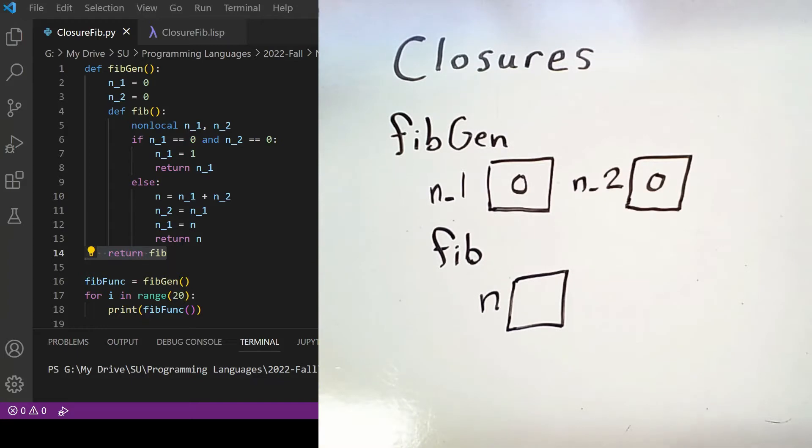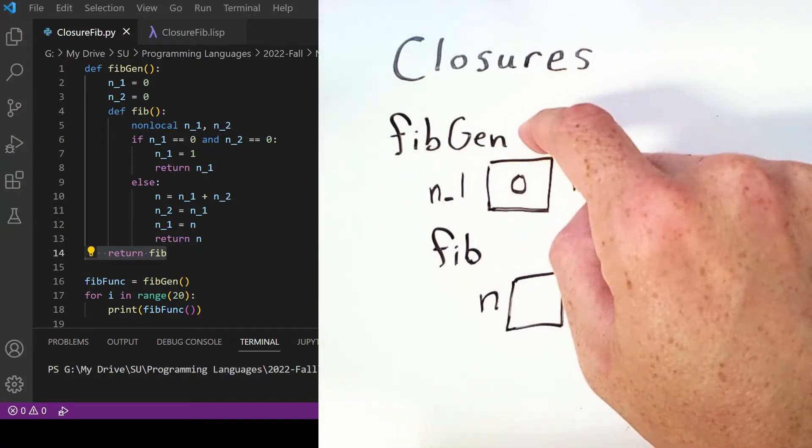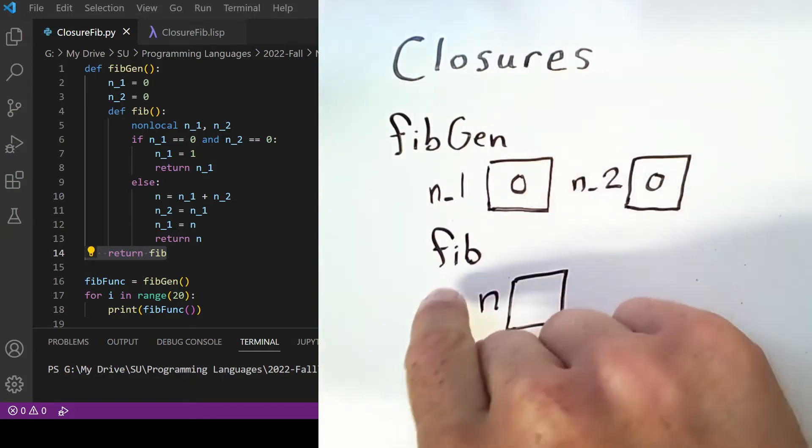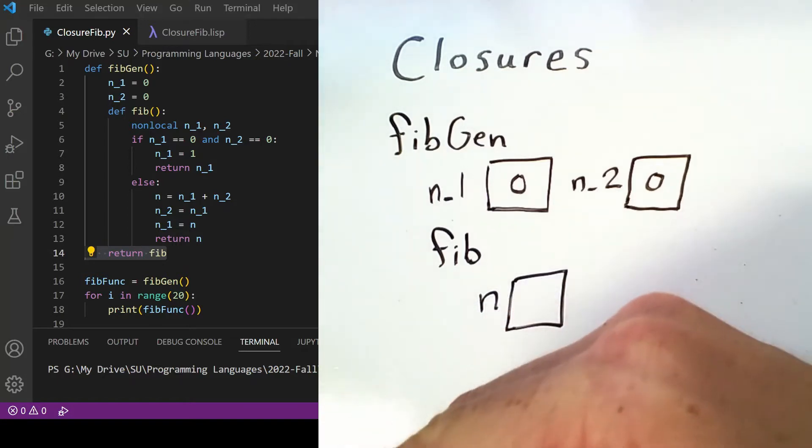Now Python has many features of functional programming. Specifically, it treats functions as first-order types. And so the next thing that the fibgen function does is it returns the fib function that was defined inside of it. Notice that in the code below this, we then assign the function returned by calling fibgen to a variable.